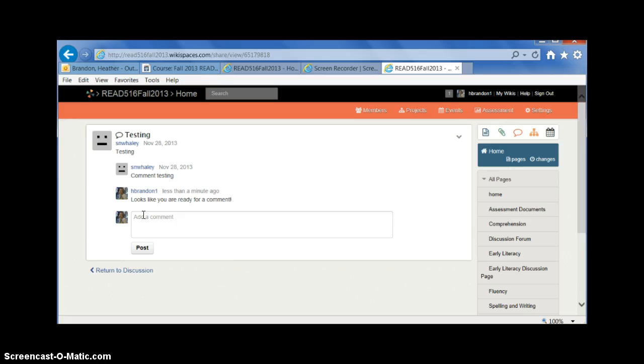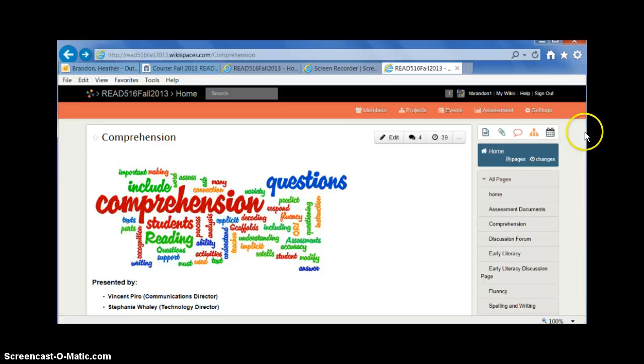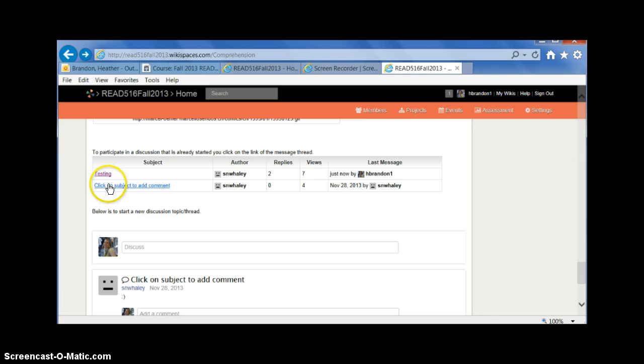So pretty straightforward on how to do that. If you are using a discussion post that has been embedded the way that Stephanie has embedded their discussion post on their comprehension page you'll just go ahead and go to the topic and then type it in there. Pretty easy to follow.